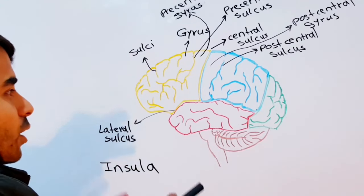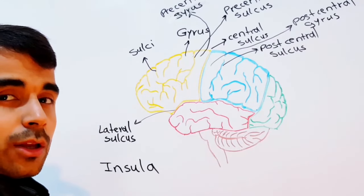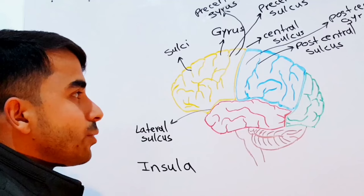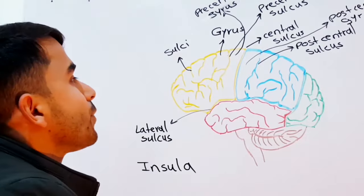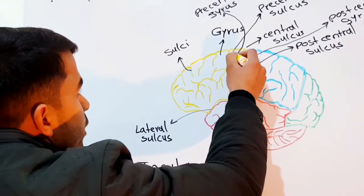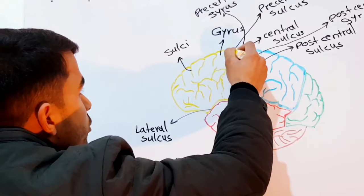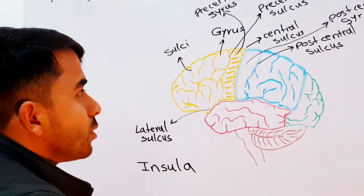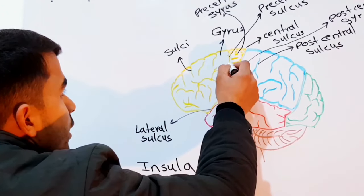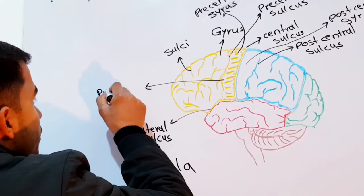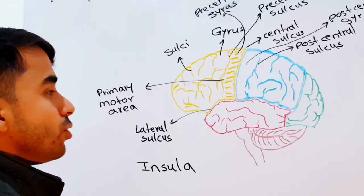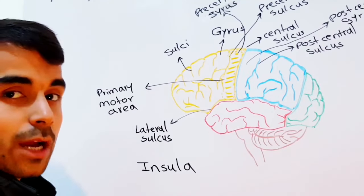In these lobes there are some very important functional areas in the cortex which perform specific functions. The very first important area is in your frontal lobe — almost this whole pre-central gyrus is your primary motor area. The primary motor area allows us to consciously move our skeletal muscles.